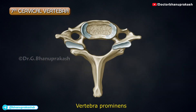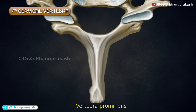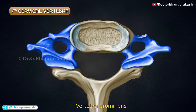The vertebra prominens, C7, is so named because of its long spinous process, which is not bifid. Its transverse processes are large, but its foramina transversaria are small.